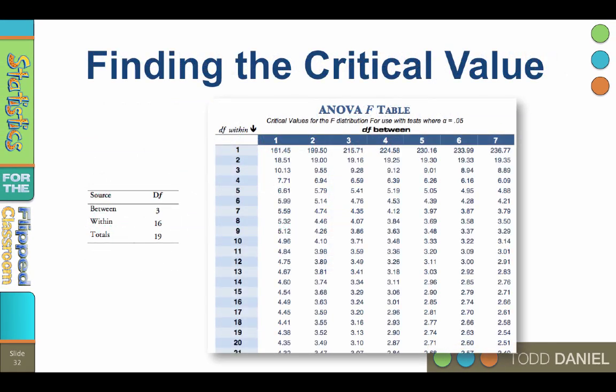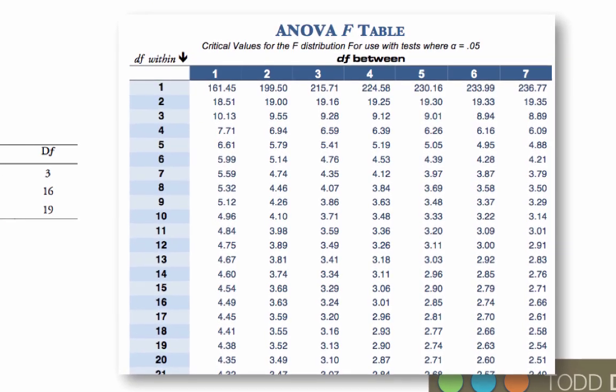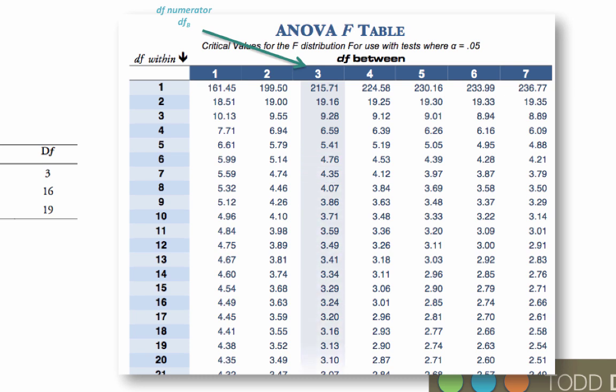Finding the critical value requires turning to the ANOVA F-table. The degrees of freedom between are contained in the columns at the top of the table. The values for the degrees of freedom within are in the rows. The intersection of the column and the row is the critical value.